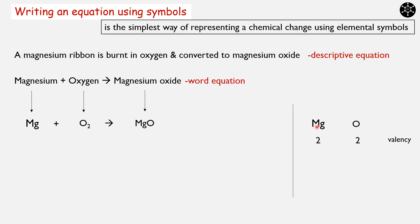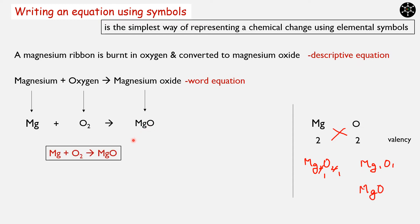To get MgO, we consider the valency of these elements. Magnesium valency is 2 and oxygen valency is 2. We exchange them to get Mg₂O₂, then simplify to Mg₁O₁, which is simply MgO. So the reaction is: Mg + O₂ → MgO. Writing an equation using symbols is much simpler than the word equation and the descriptive equation.